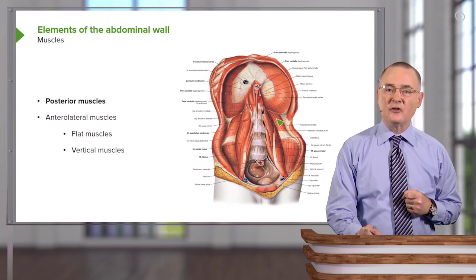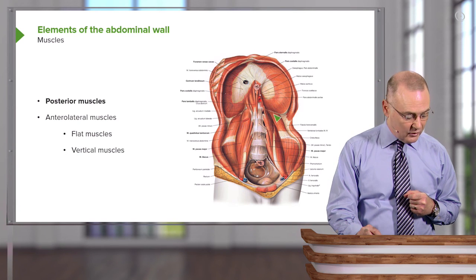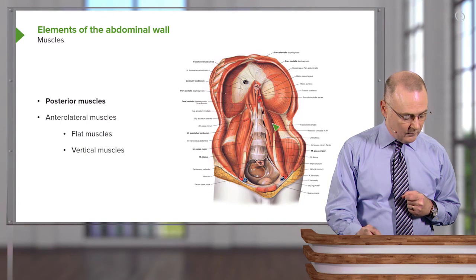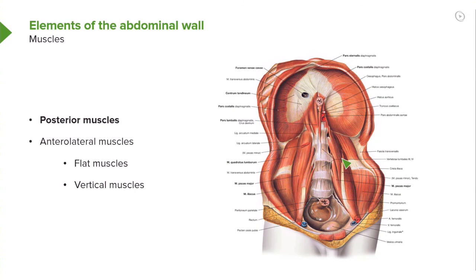These posterior wall muscles include the quadratus lumborum, the psoas major, and the smaller psoas minor — we just see the belly here and then a longer tendon. This one may be absent. We also have the iliacus as seen in through here.